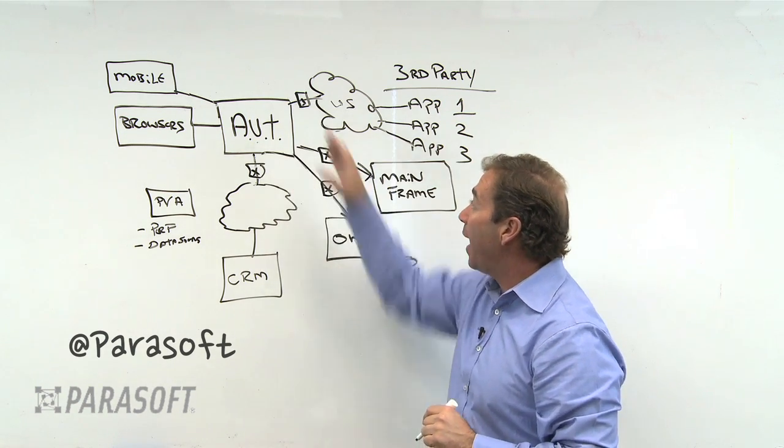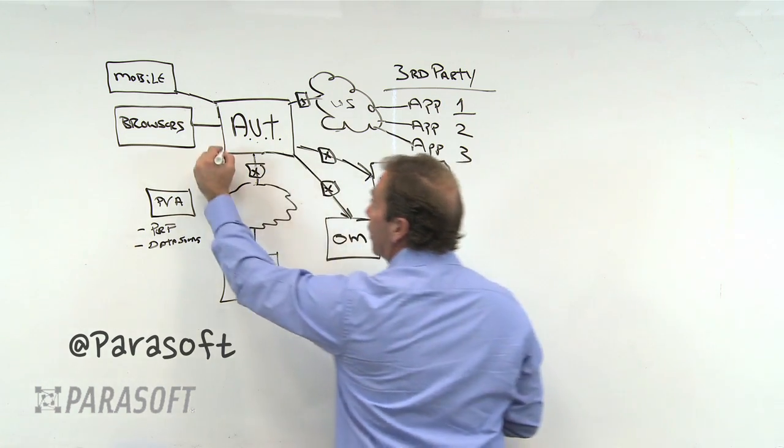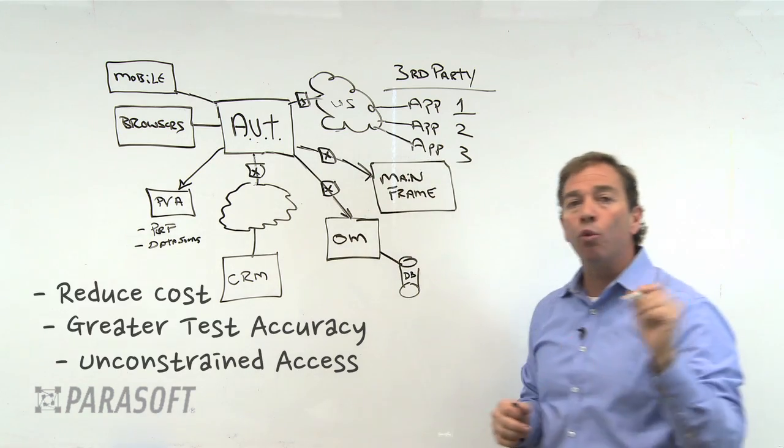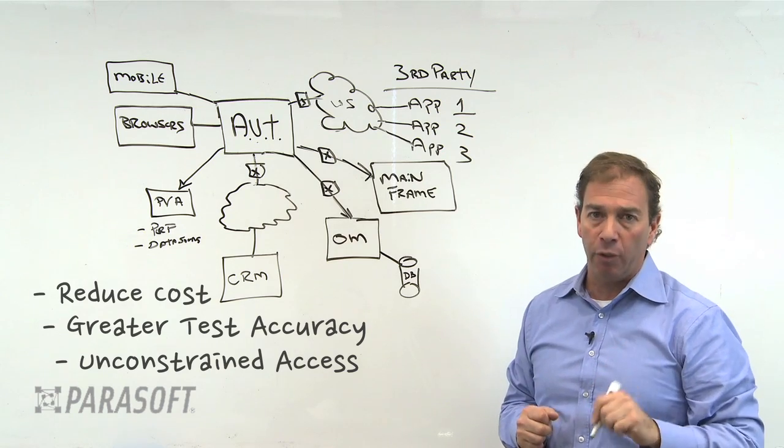So every point where you see an X here, we direct that communication to a Parasoft Virtualized Asset in order to recreate the system you need to test more accurately.